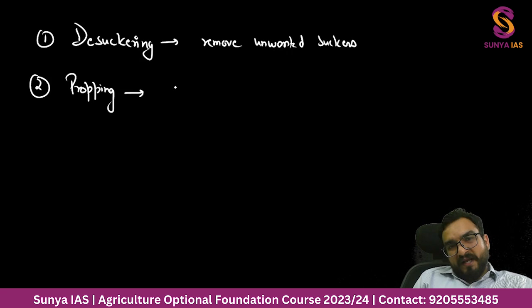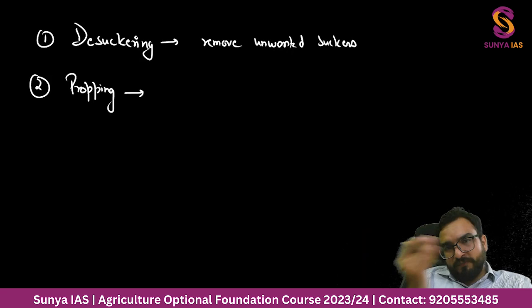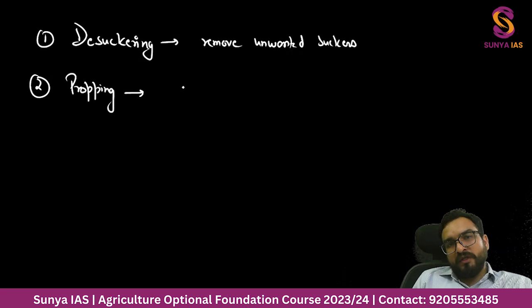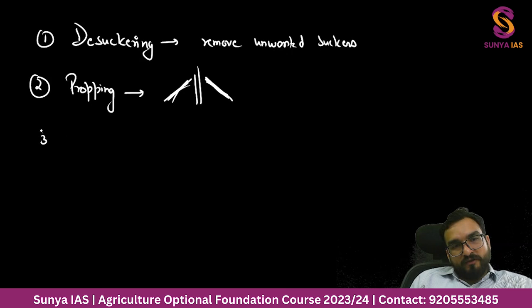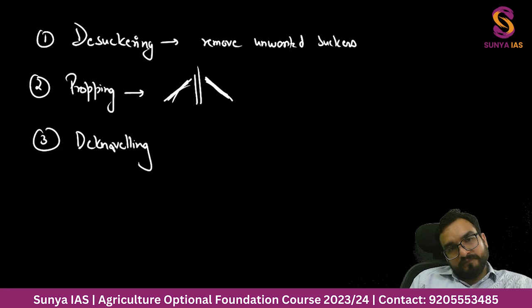Another cultural practice is propping - giving support to the banana plant. When bananas reach full maturity, the plant tends to bend under the weight. To stop this bending and prevent damage to the crop and fruit, the banana tree is supported by propping.